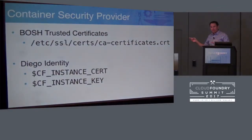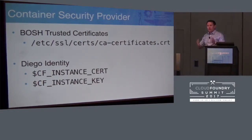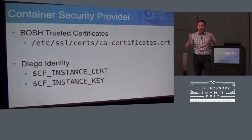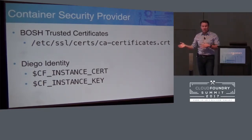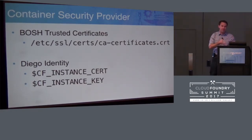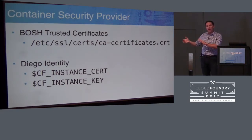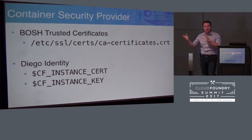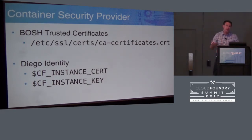In summary for the Container Security Provider: Bosch trusted certificates are automatically noticed and added at the end of the chain. Diego identity is noticed and also added at the end of the chain. If you want to use other certificates for the handshake, your explicit configuration always takes precedence. We sit at the end as a fallback. I hope more of you will start using this because you just get a bunch more security for free.